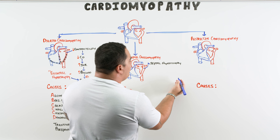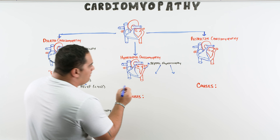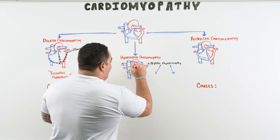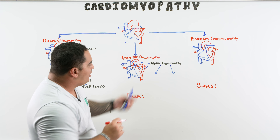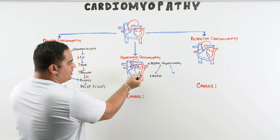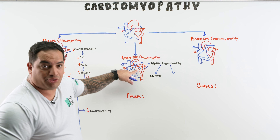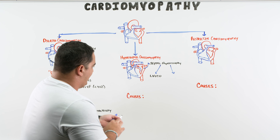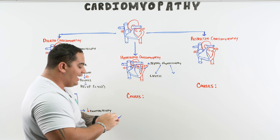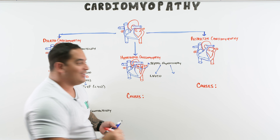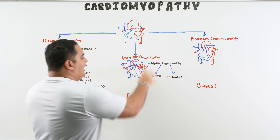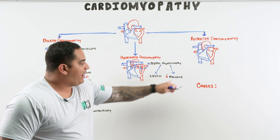Septal hypertrophy does two things. First, it creates a left ventricular outflow tract obstruction — the blood trying to get out into the aorta is completely obstructed by the big chunky septum. Second, it crowds out the left ventricular space, making it almost impossible to fill the ventricle, so there's an impaired filling process and a decrease in ventricular filling.